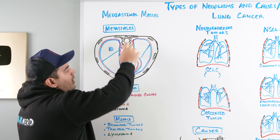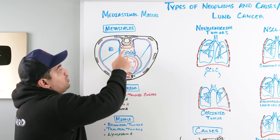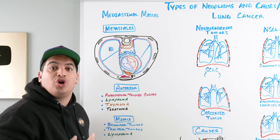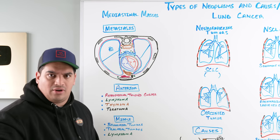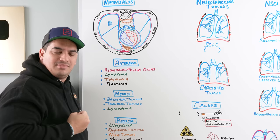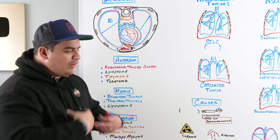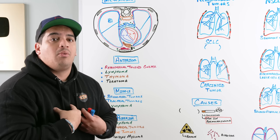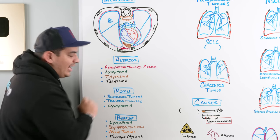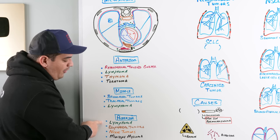The posterior mediastinum runs from behind the tracheal bifurcation to the vertebrae. Structures here that can become abnormal include the esophagus, lymph nodes, nerve sheaths — particularly of the sympathetic plexus and vagus nerve — and bone marrow. Key masses include esophageal tumors, lymphomas, nerve sheath tumors, and multiple myeloma.